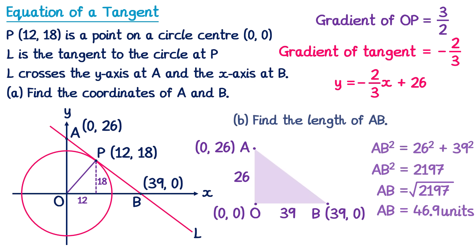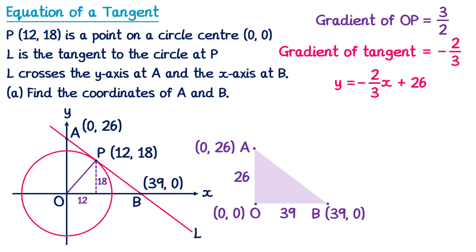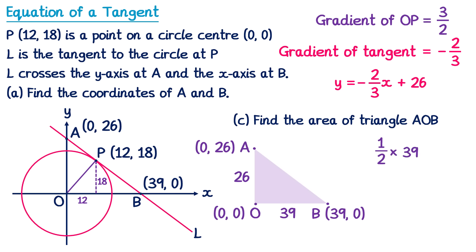One final question you want to be prepared for is to find the area of the triangle — it might say: find the area of triangle AOB. With the information we've already written, this is very easy. The area of a triangle equals one half multiplied by the base, 39, multiplied by the perpendicular height, 26. If you do this you'll end up with 507. Just like with the length, we don't have units here, but we know they'd be something squared, so the question may give the units as units squared.